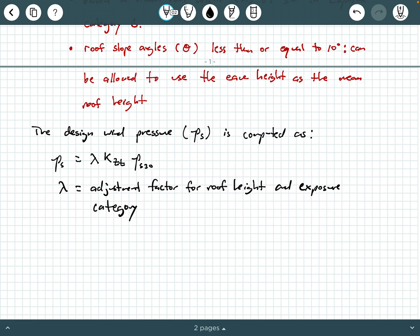This lambda value is an adjustment factor for roof height and exposure category. If you have a roof mean height that's different than 30 feet or an exposure category that's not exposure category B, as the procedure assumes it to be, then you can apply this adjustment factor lambda. You get this from figure 28.5-1, and that can account for other mean roof heights and other exposure categories. In my copy of it, it's page 316.